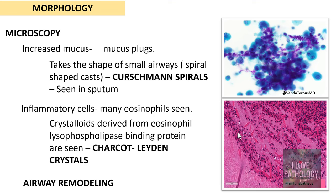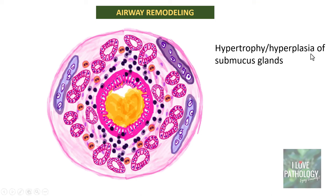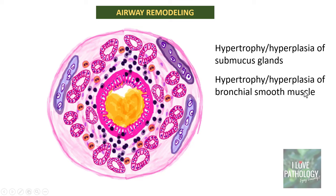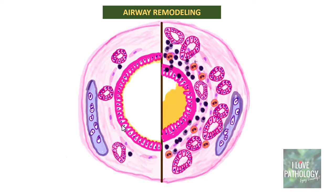The third important morphological aspect of asthma is airway remodeling, seen in long-standing cases. Airway remodeling means hypertrophy or hyperplasia of the submucous glands, hypertrophy and hyperplasia of the bronchial smooth muscle, and deposition of sub-epithelial collagen resulting in thickening of the basement membrane. Comparing the normal bronchi with the asthmatic bronchi, you can appreciate increased submucous glands, lots of bronchial smooth muscle, thick sputum in the lumen, and lots of inflammatory cells including eosinophils.